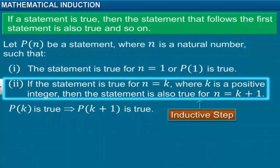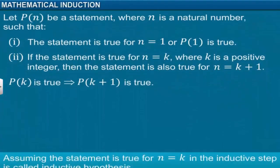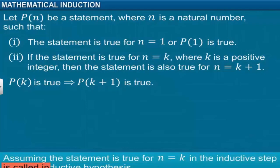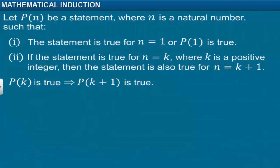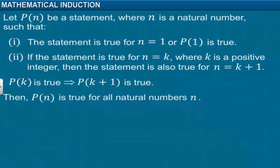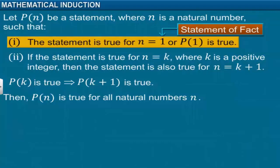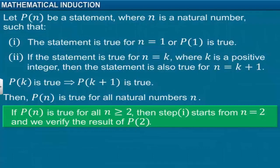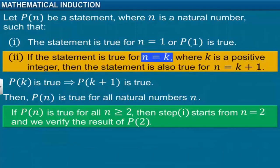This is also referred to as the inductive step. Assuming the statement is true for n equal to k in the inductive step is called the inductive hypothesis. P(n) is true for n equal to k, while principle 2 is a condition. If P(n) is true for all n greater than or equal to k, then the first step starts from n equal to k, and we verify the result of P(2). Next, if the second principle is true for n equal to k, then it is also true for n equal to k plus 1.